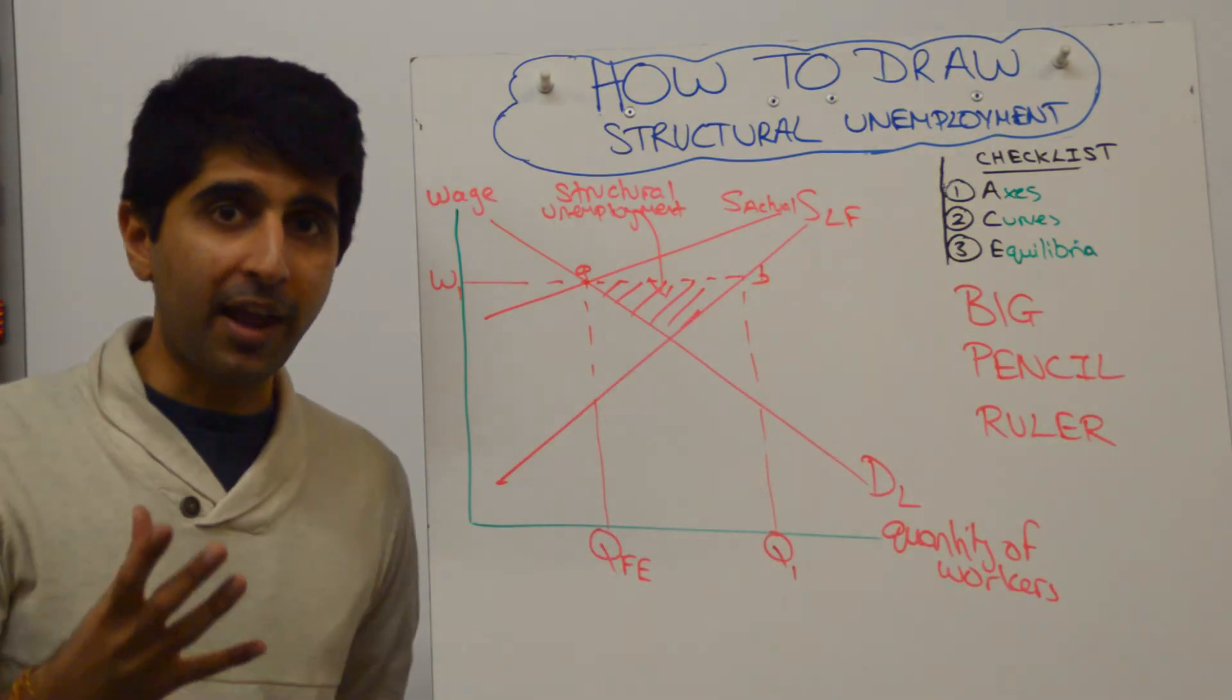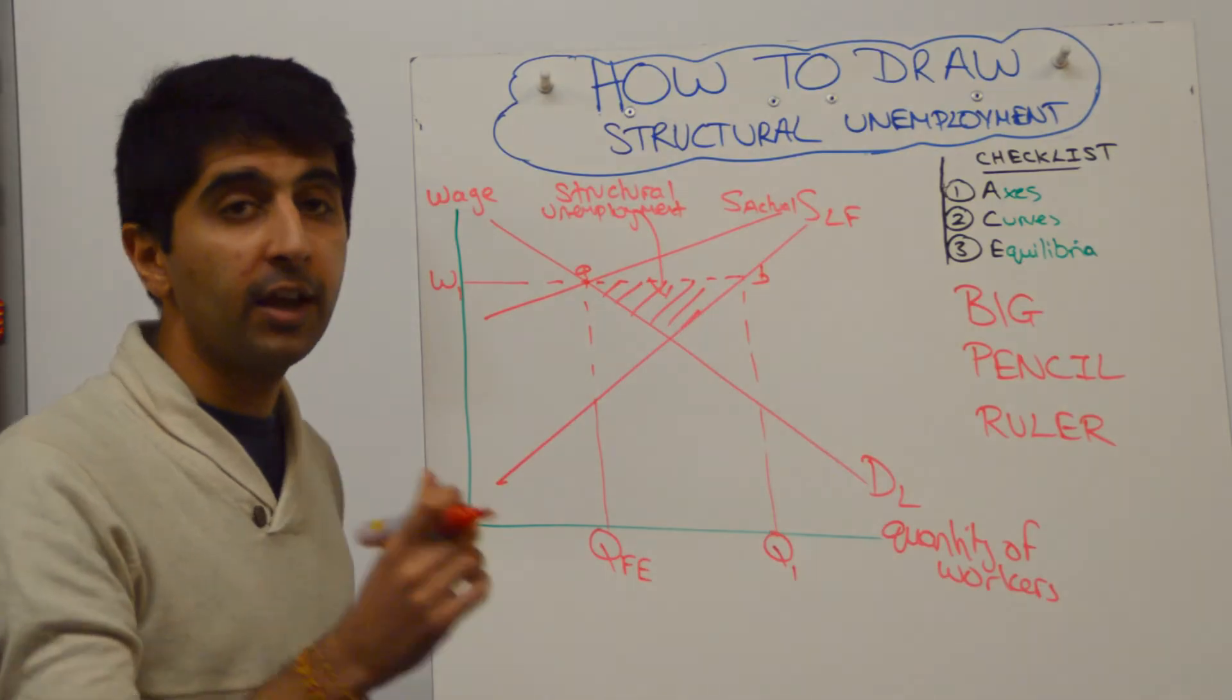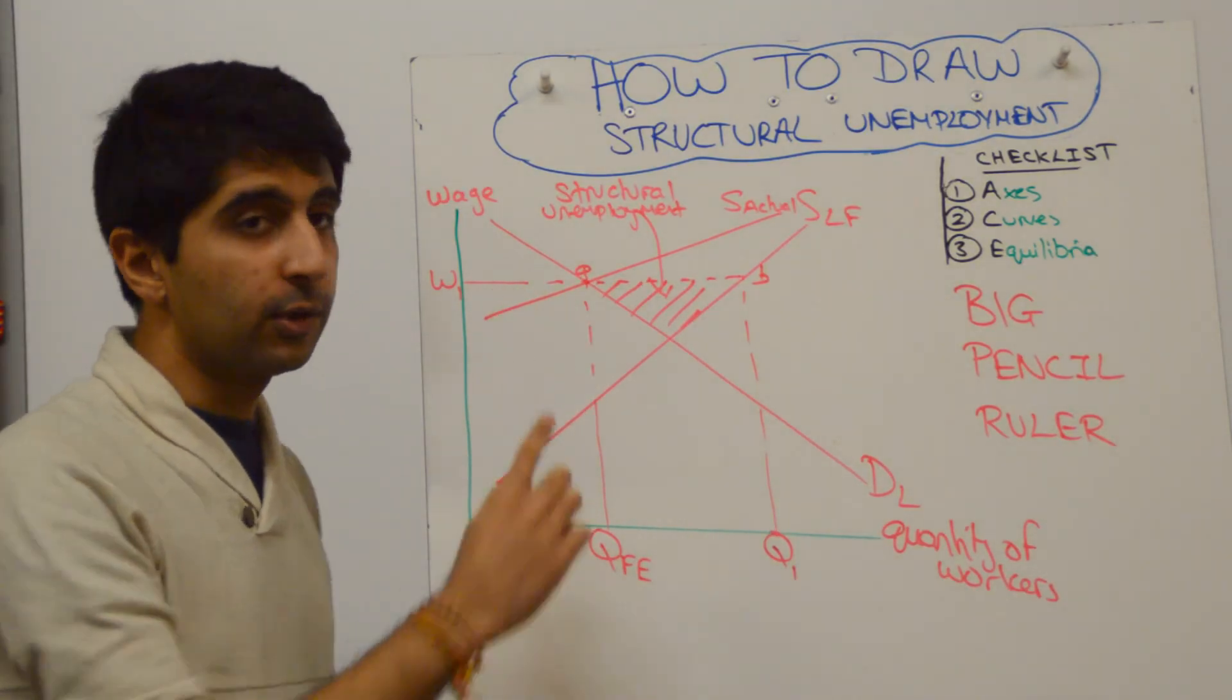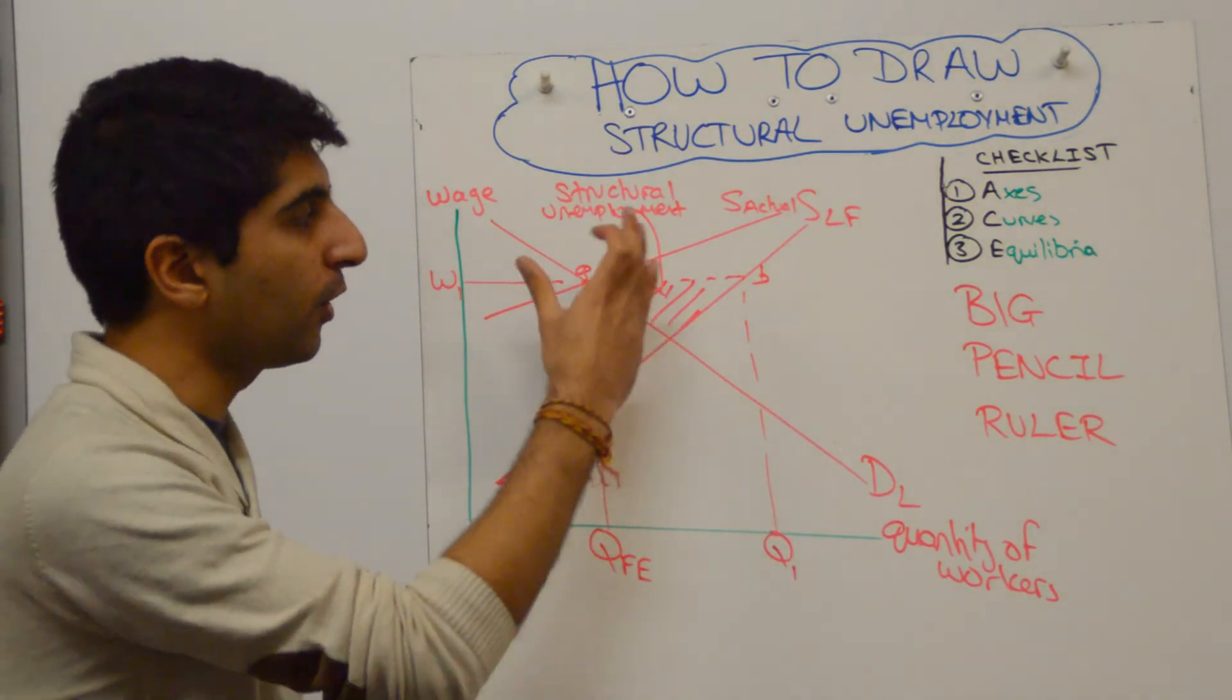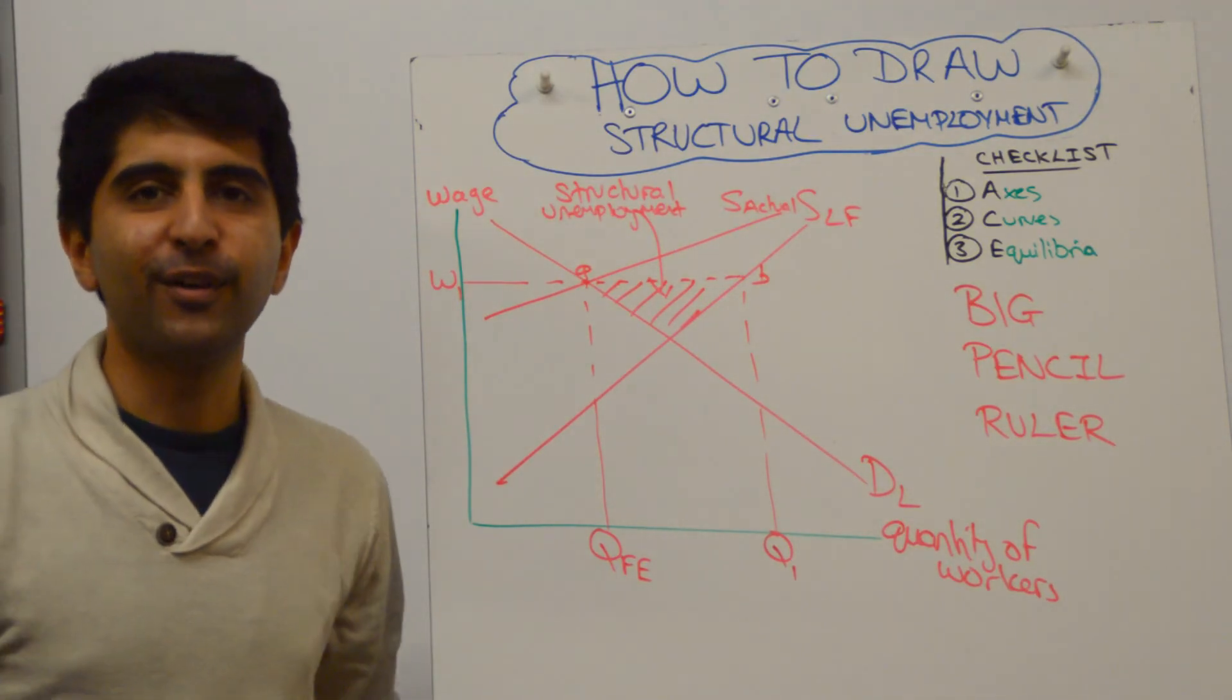Our checklist, let's make sure we've aced the diagram. Have we labelled our axes? Yes. Have we labelled all of our curves? Yes. Have we labelled the relevant equilibrium? Yes, we have. Have we shown our structural unemployment clearly? Yes. In which case, we've done our job, we can move on to the next diagram.